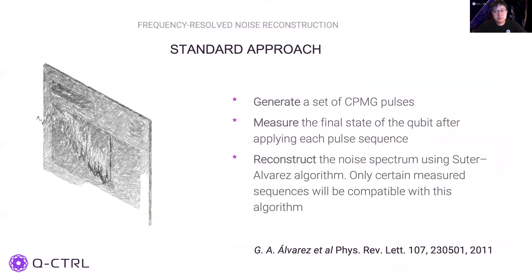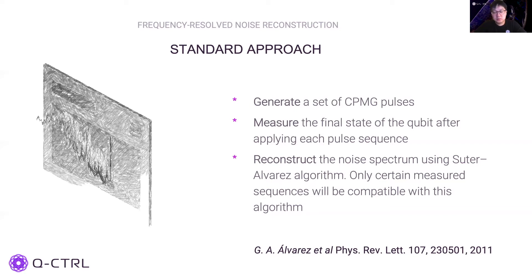Before diving into the details, we briefly talk about the standard way of performing noise reconstruction. For example, to characterize the dephasing noise, it usually consists of three steps. First, generate a set of CPMG pulses and measure the final state of the qubit after applying each sequence. Then reconstruct the noise spectra using the standard Álvarez-Suter matrix inversion algorithm. There are several issues with this standard approach. First, the CPMG sequences restrict the density of measurements since the peaks of the harmonics must lie within the band of interest. Also, the CPMG sequences have higher-order harmonics, which can lead to higher-frequency noise processes incorrectly contributing to the reconstruction — a process known as spectral leakage — which often makes the reconstruction results unreliable.